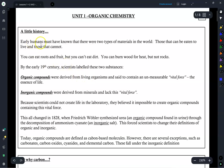Alright, so early humans must have known that there were two types of materials in the world: those that can be eaten to keep you alive and those that cannot. You can eat roots and fruit, but you can't eat dirt itself. I mean you can, but it won't really help you to stay alive.